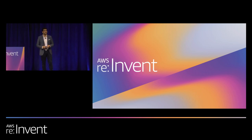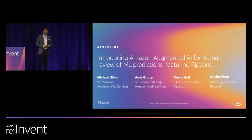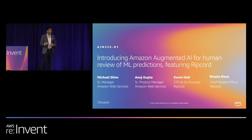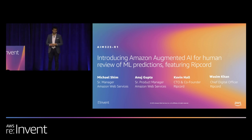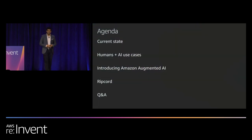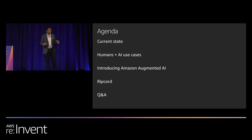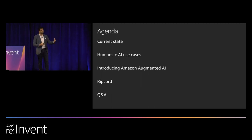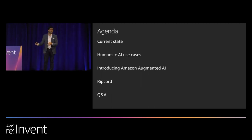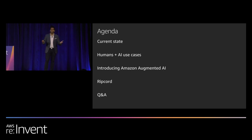Hi everyone, this is Anuj. I'm a senior product manager at Amazon and I'm here to introduce Amazon Augmented AI for the human review of ML predictions. We also have Ripcord with us. I'm Anuj, the product manager on the team. We have Michael Shim, a senior manager, and Kevin and Vaseem from Ripcord. Today we'll cover the current state of machine learning, use cases where human and AI come together, what A2I is and how it's useful, Ripcord's document processing use case, and we'll leave about 10 minutes for Q&A.